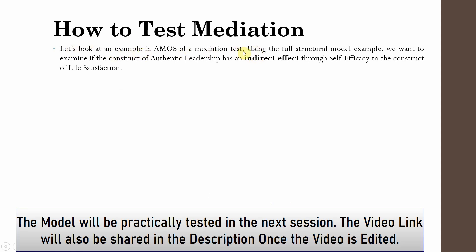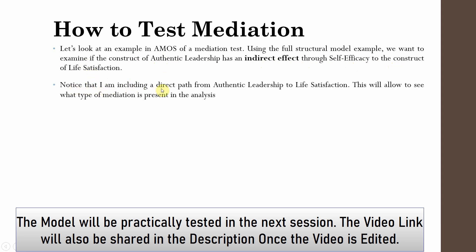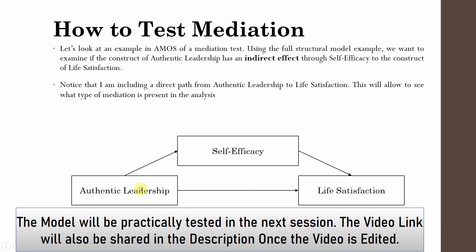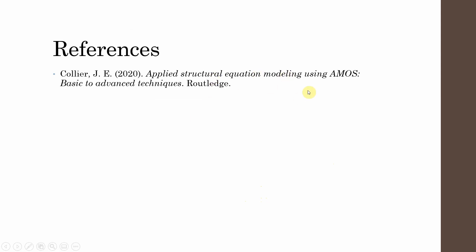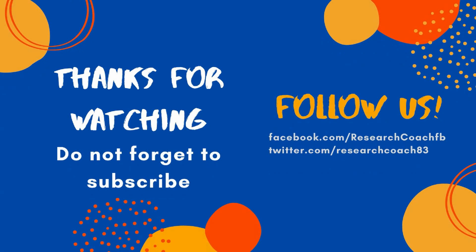Let's look at an example in AMOS of a mediation test. Using the full structural model example, we want to examine if authentic leadership has an indirect effect through self-efficacy to life satisfaction. The mediator is self-efficacy, the IV is authentic leadership, and the DV is life satisfaction. A direct path from authentic leadership to life satisfaction is included to identify what type of mediation is present. Path A goes from authentic leadership to self-efficacy, path B from self-efficacy to life satisfaction, and path C complement is the direct path. Without self-efficacy, this would simply be path C. If you want to know more about mediation and other techniques in AMOS, this is a very good read. Thank you.